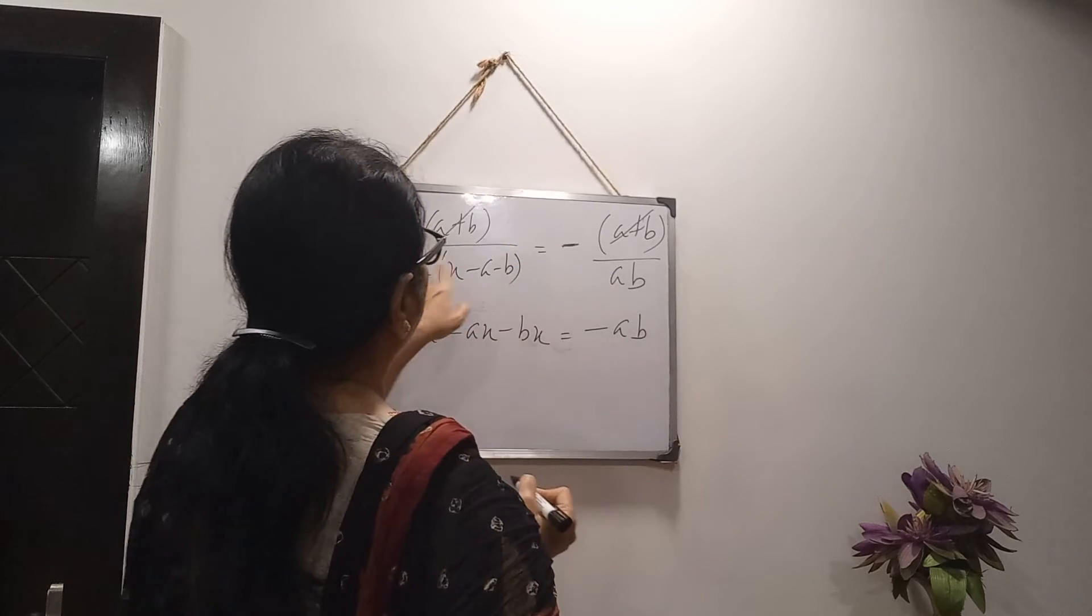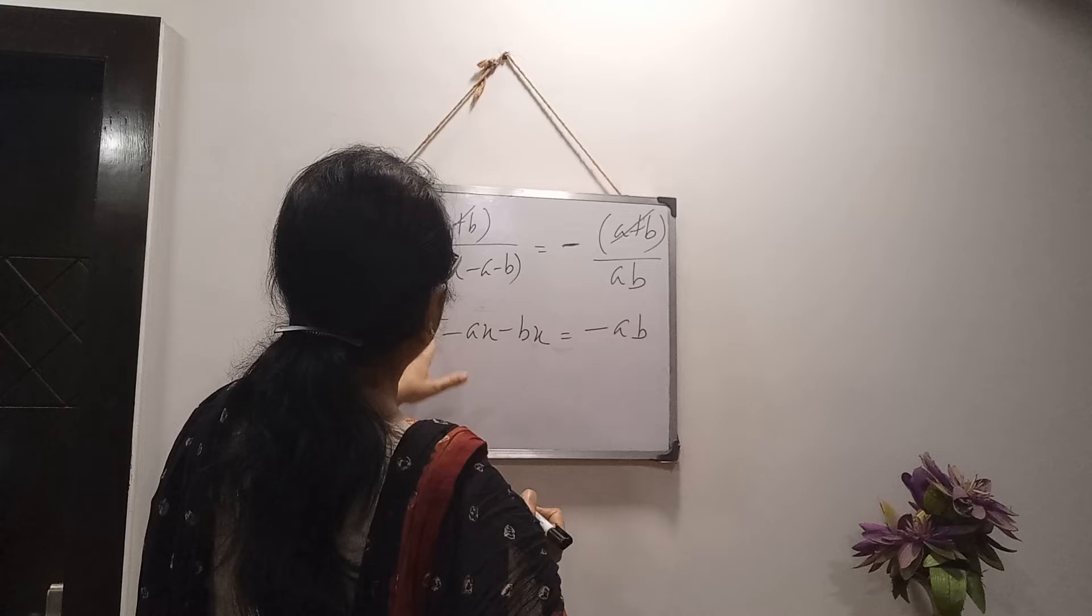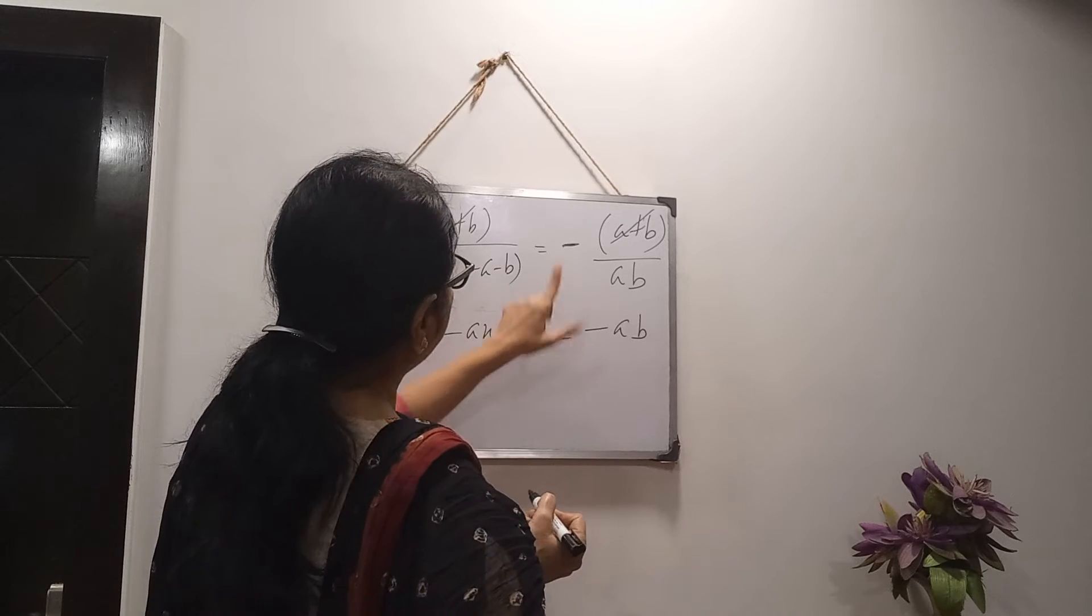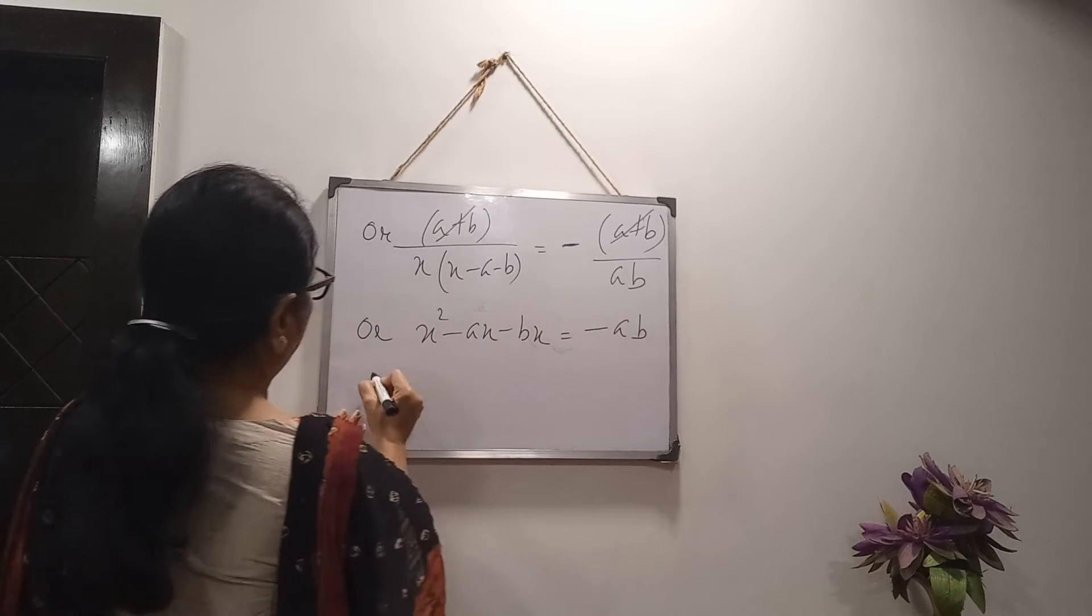So, this term, I am multiplying. I am writing x square minus ax minus bx. Here, there is minus. This minus now, I am multiplying with this. It will be easier. Minus ab. Cross multiply. Here, I have 1 is there. I have cross multiplied x. And open the bracket. x square minus ax minus bx. And this is minus ab into 1. That means minus ab.